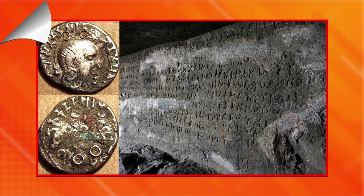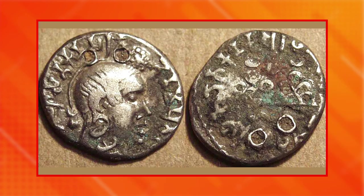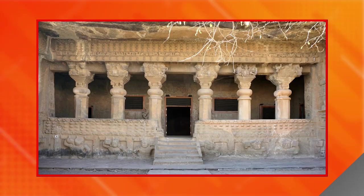As we know, Satavahanas minted a large number of coins in lead, silver and alloy of copper. The silver coins of Satavahana rulers carry the image of the kings and their names. Other sources that provide valuable information about the Satavahana are the edicts discovered in Buddhist rock-cut caves, which record donations made by Satavahana kings and coins to the people of their kingdom. By comparing information from these different sources, scholars generally accept that the Satavahanas began their rule in the 1st century BCE. The earliest record is found engraved on rock in a cave near Nasik in Maharashtra.